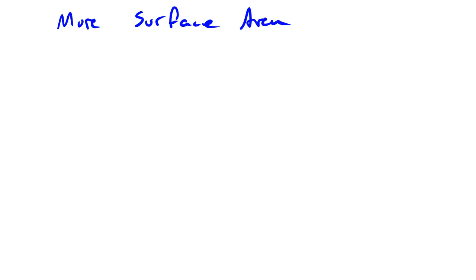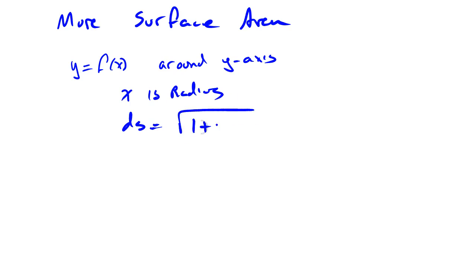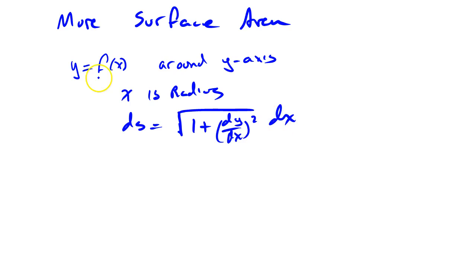In this video I want to take a look at calculating surface area on surfaces of revolution and pointing out some different ways you could do it depending on the situation. In the previous video we looked at a curve where you had y as some function of x and we were rotating around the y-axis. In that case, the x value was used as the radius and ds was the square root of 1 plus (dy/dx)² dx. Arc length uses this same formula, and we saw it was just as easy to calculate with respect to x or with respect to y depending on how the function was given.